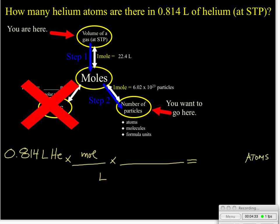The second step, we need to cancel those units of moles. We don't want moles on our final answer. So we'll put the moles on the bottom. And we're looking for the number of atoms on top.